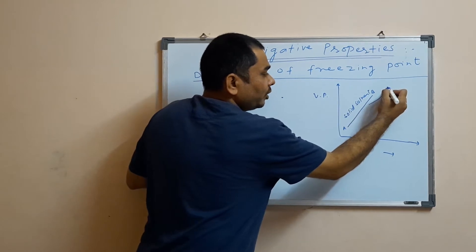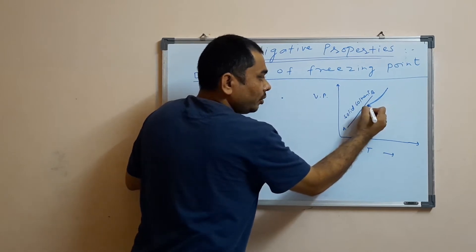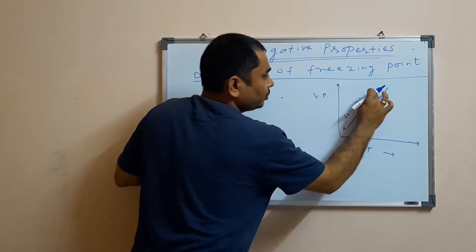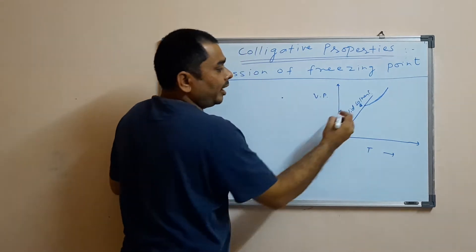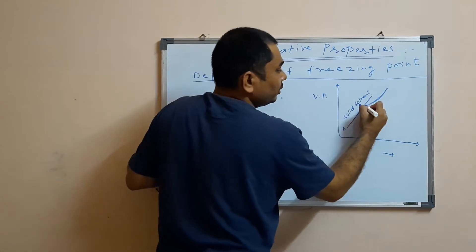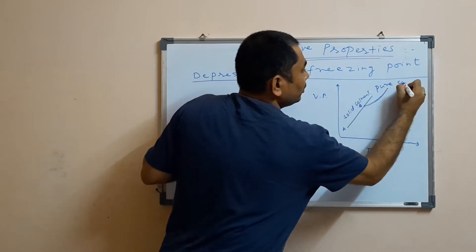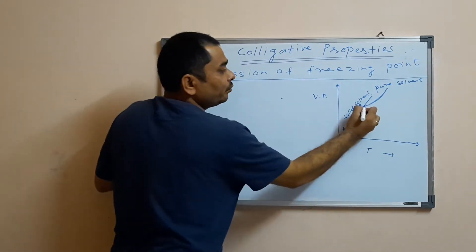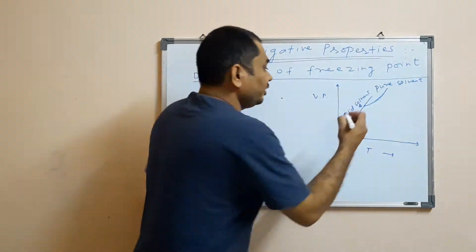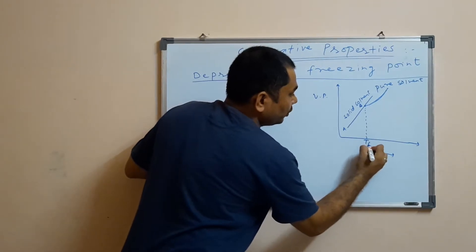This is the liquid solvent. As you decrease the temperature, the vapor pressure of the liquid solvent also goes on decreasing. At this point, the solid solvent and the pure liquid solvent are in equilibrium with each other — their vapor pressures are equal. So this temperature is the freezing point of the pure solvent.